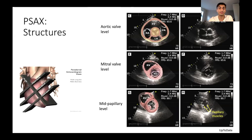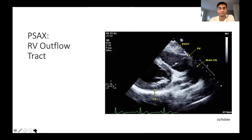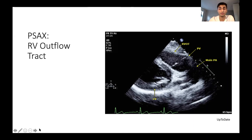Moving into the parasternal short axis views: first, at the aortic valve level — more towards the base of the heart — we're able to visualize different structures, with the important one being the aortic valve. Then at the mitral valve level, we can see where the mitral valve corresponds. At the mid-papillary level, you're able to visualize the papillary muscles. One other important view with the parasternal short axis is the right ventricular outflow tract, which is important for seeing how blood is flowing into the pulmonary artery — showing the RVOT, pulmonary valve, and the main pulmonary artery.